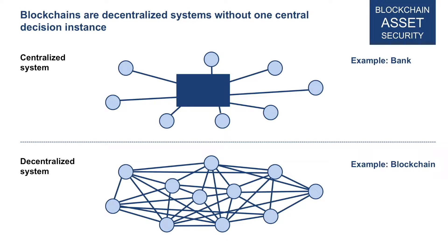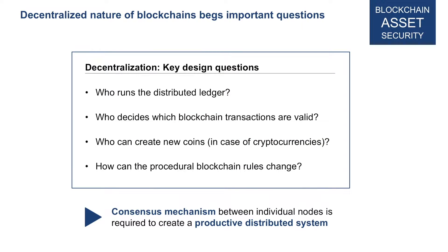A decentralized system like Bitcoin or any blockchain works differently. There is no centralized institution that decides which transactions are valid, who is right, or how the system is operated. And this raises a significant number of very important questions that need to be answered when designing a distributed system like a blockchain.